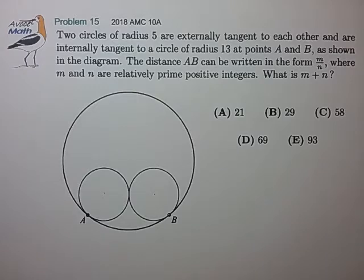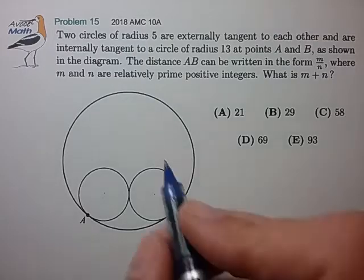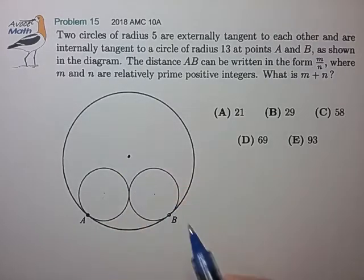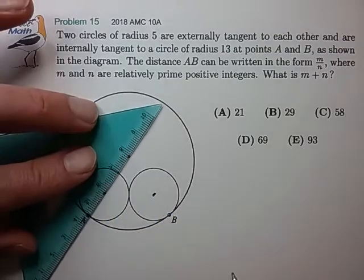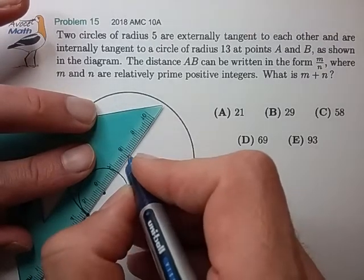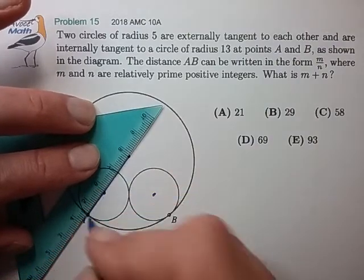Okay, so we have some tangent circles here, so let's draw in our standard auxiliary lines, the radii to all the tangent points. So that's the center of the large circle. Smaller circles. Draw in radii to the tangent points.